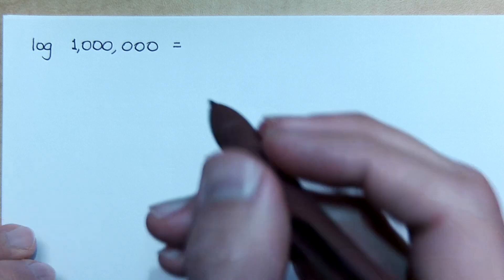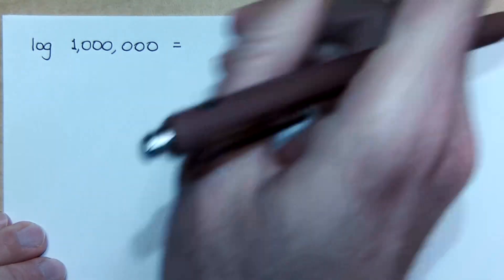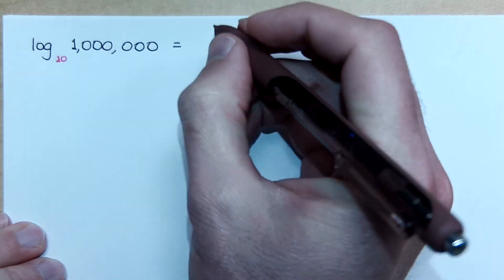We're at log of one million. Log ten, so how many zeros are? Yeah, you're right. It's log base ten. You count the zeros. There are six.